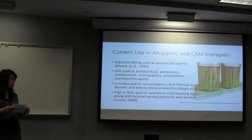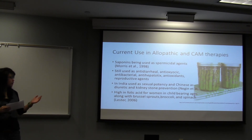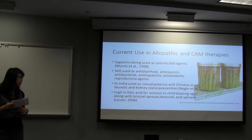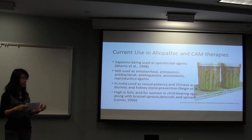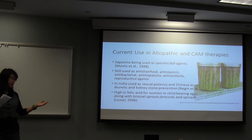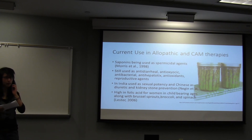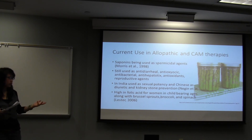Current use in allopathic and complementary alternative medicine: asparagus is still being used as a spermicidal agent in traditional societies. It's still used as anti-diarrheal, anti-oxalate, antibacterial, liver protective, and antioxidant. Many traditional societies like India and China use it — India for sexual potency and China for diuretic effects and kidney stone prevention. Folic acid supplementation is well-recognized and given to most women. Otherwise, most of the chemistry is still being discovered, so there's not really much of a supplement available for other uses besides folic acid.